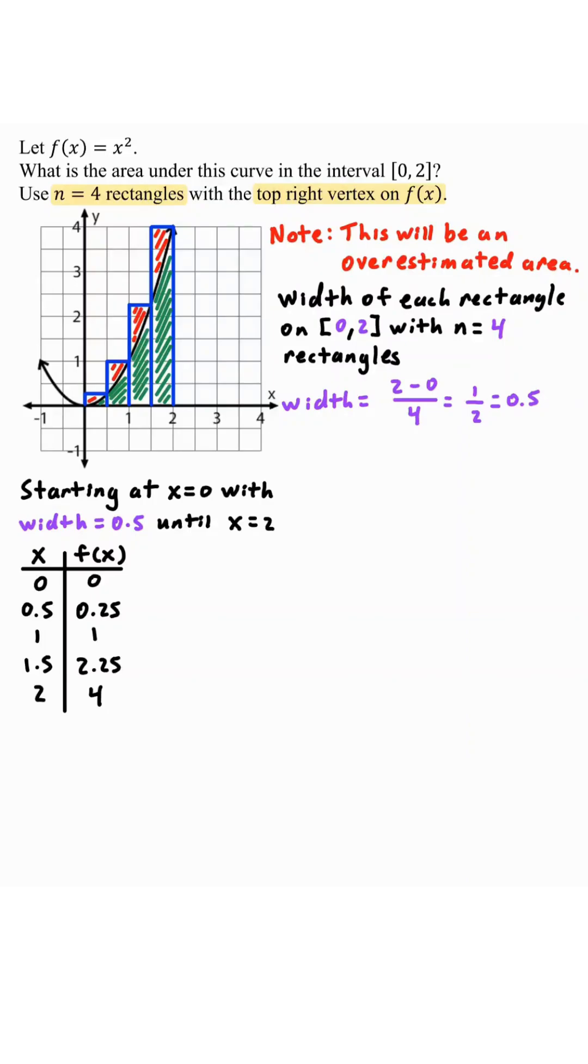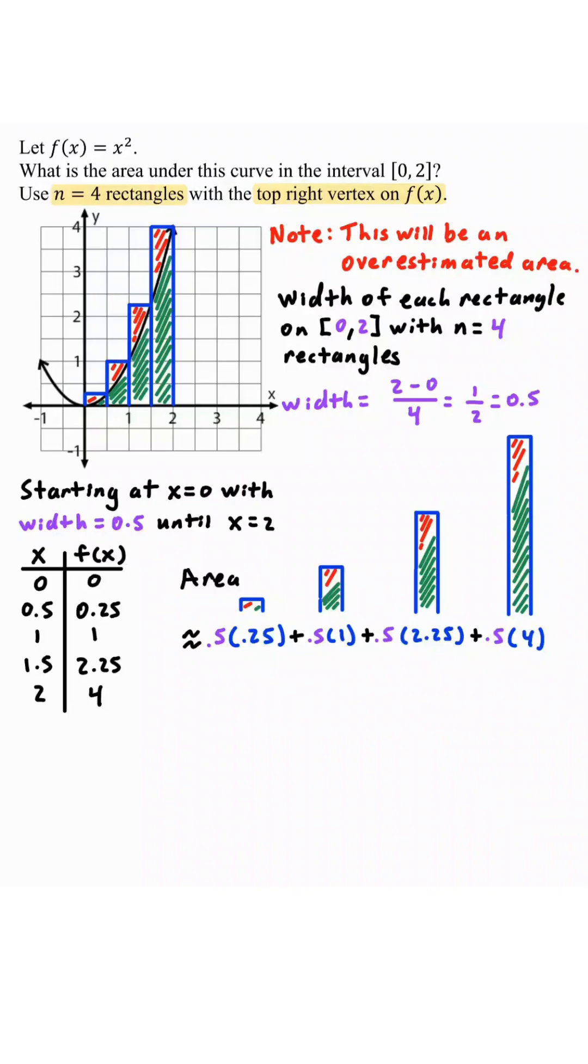To find the area of these rectangles, we're just going to add up all four of these areas together. Notice that each of them has a base of 0.5 and a height of 0.25, 1, 2.25, and 4.